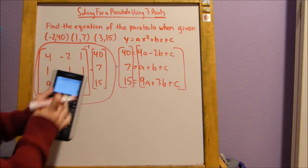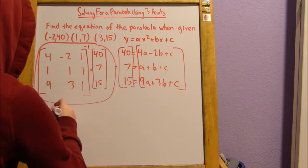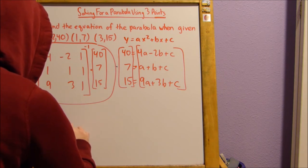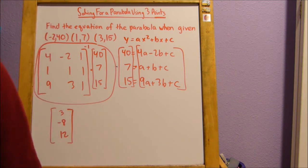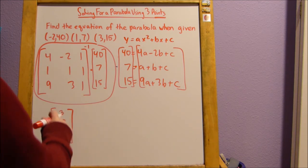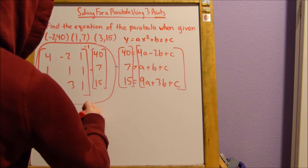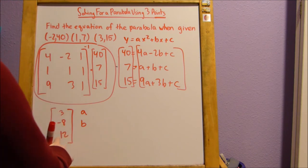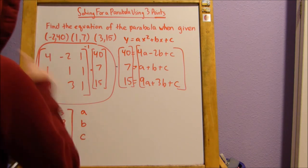And now, what we end up getting in our calculators is 3, negative 8, and 12. Now, you're probably looking at those numbers and you're like, what? I don't understand what's going on. But really, it's super easy. The first number is going to be the a. The second number is going to be the b. And the third number is going to be the c.